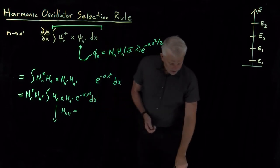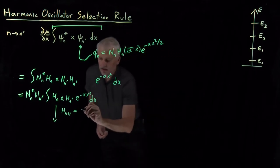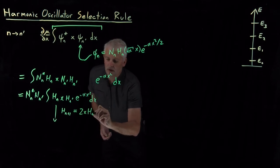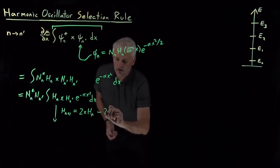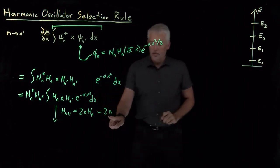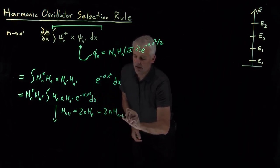Let me look this up and make sure I get the coefficients right. 2 times x times the n-th polynomial, and minus 2 times the quantum number times the one below that, H_n minus 1.